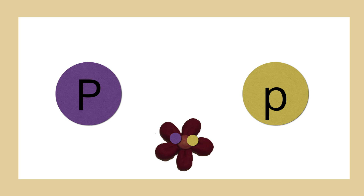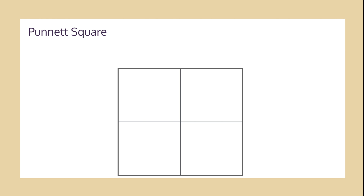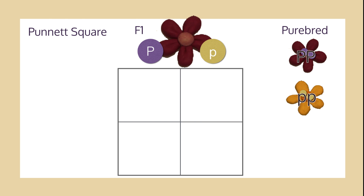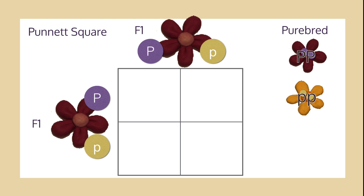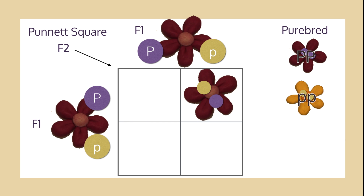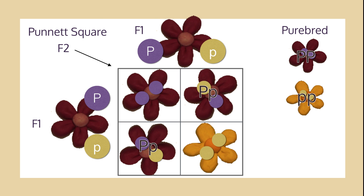The purple pea allele is dominant because it is shown, so it will be represented with a capital P. The white pea allele is recessive, so it will be represented with a lowercase p. This is a diagram known as a Punnett square, that allows us to plot out the various traits. The purebred peas were capital P, capital P and lowercase p, lowercase p. The F1 hybrids were both capital P, lowercase p, with one of each allele. Because of this, the dominant purple pea became the phenotype. In F2, however, the ratio was 3 to 1, with three purple flowers and one white flower. This is because there were two capital P lowercase p's, one capital P capital P, and one lowercase p lowercase p. The white pea flower exists because it contains no dominant purple alleles — it only contains recessive white alleles.